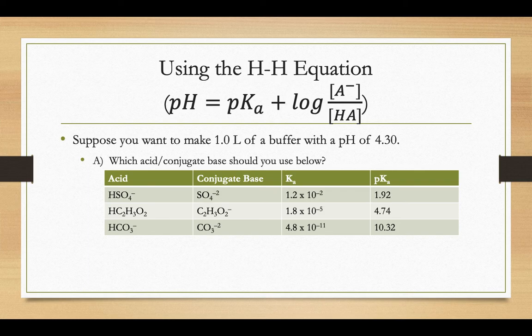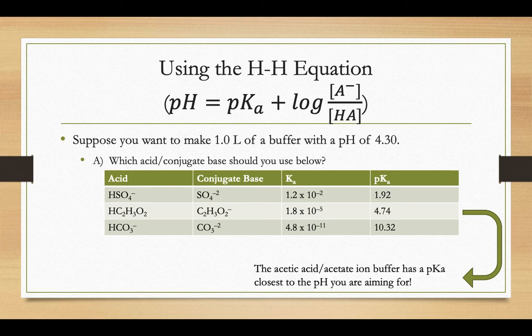We have the Ka values and the pKa values there. So if our goal is to try and get a pH of about 4.3, the majority of your buffer is going to be based off of that pKa value. So we want to pick an acid-conjugate base pair that's somewhere close to the pH that we're going for. Since we're aiming for a pH of 4.3, I'm going to choose that acetic acid-acetate ion combination because the pKa is closest to the pH that we're aiming for.